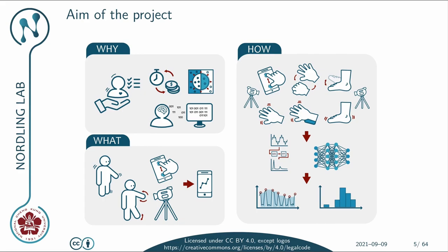My vision is to contribute to the next revision of UPDRS, to use computer vision and AI to automate and digitalize the assessment. As a step towards this goal, we have been focusing on the motor examination part of UPDRS and selected seven tests: finger tapping, hand movement, postural and rest tremor for the hands, leg agility, toe tapping, and rest tremor for the legs.